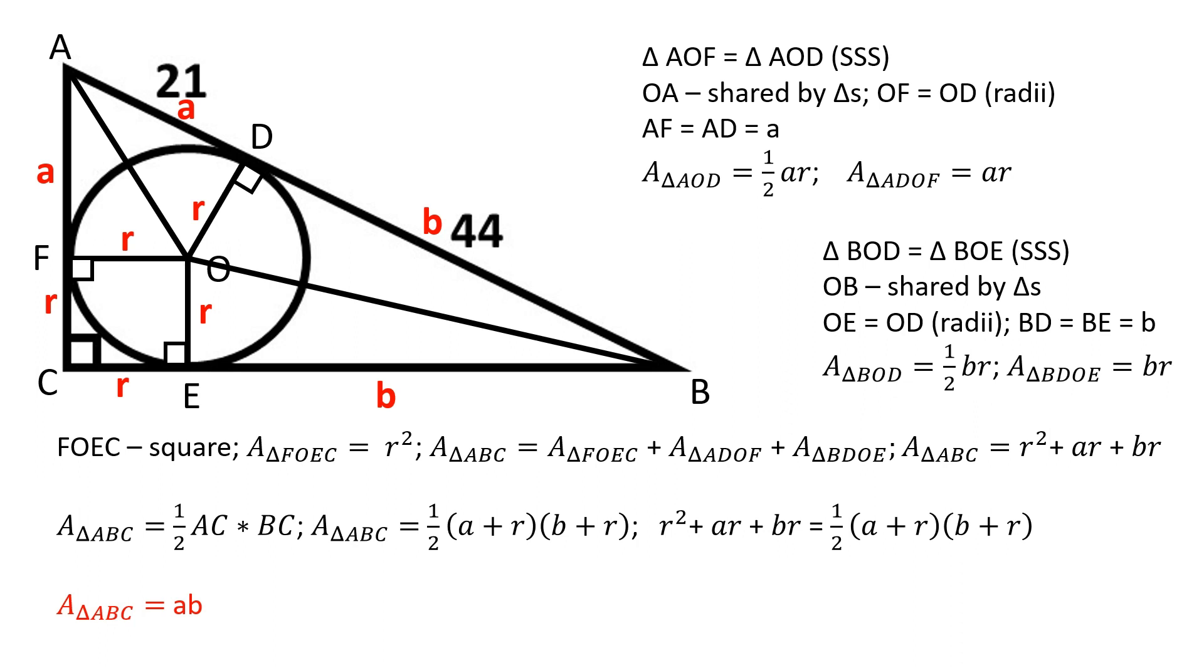The full explanation of how I ended up at this result can be found in the description below. The area of the triangle ABC is equal to 924 square units.